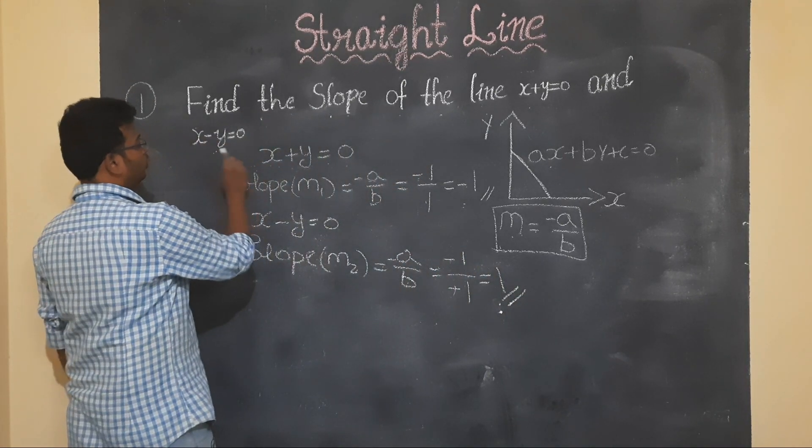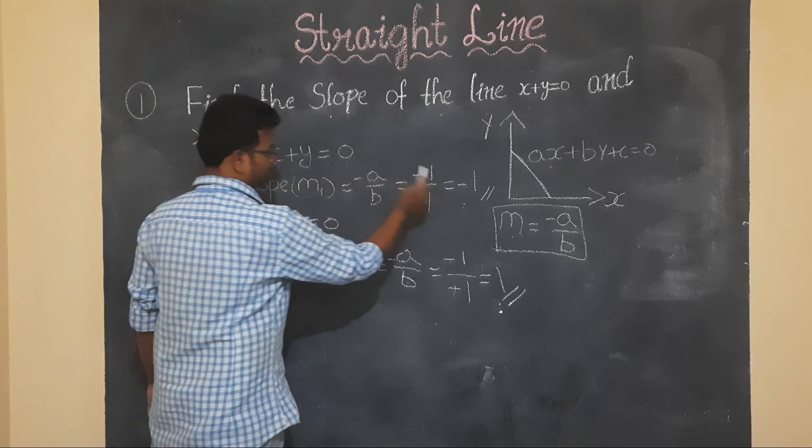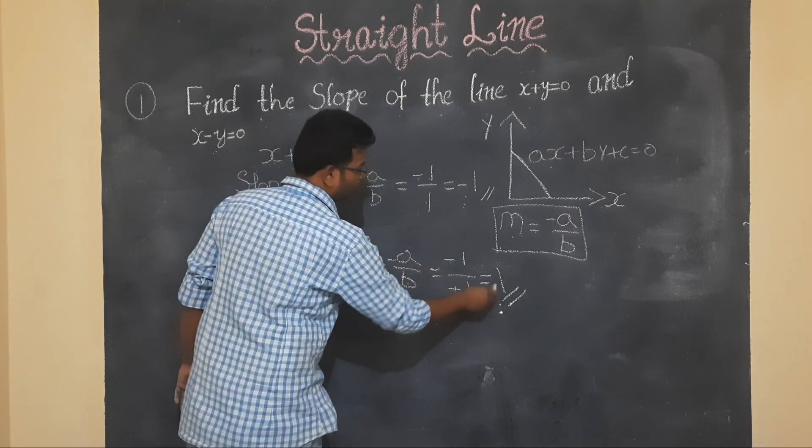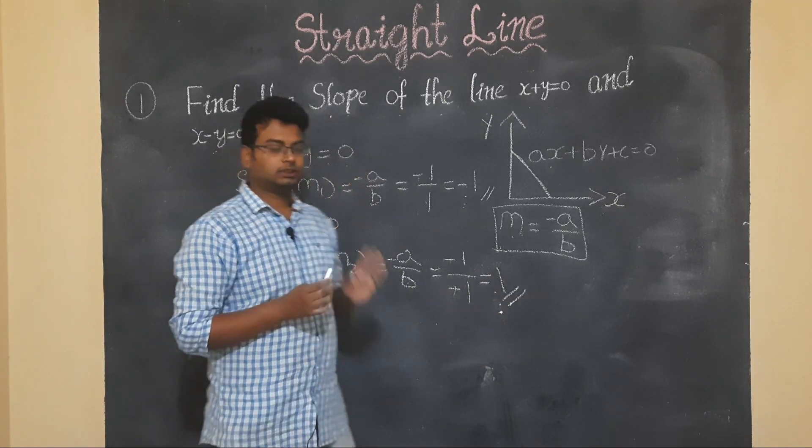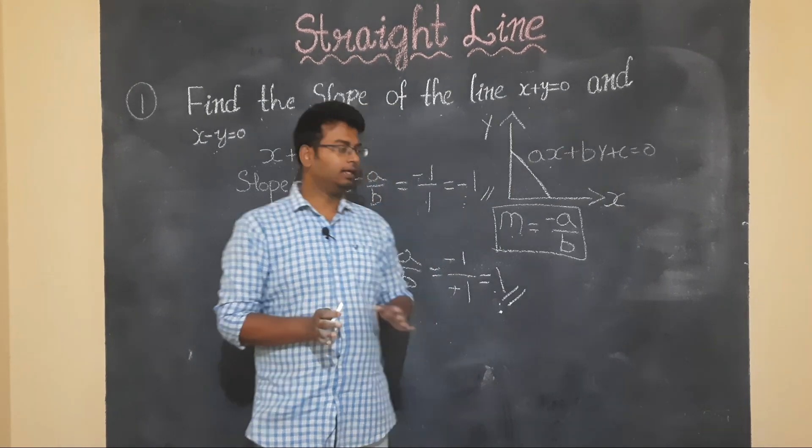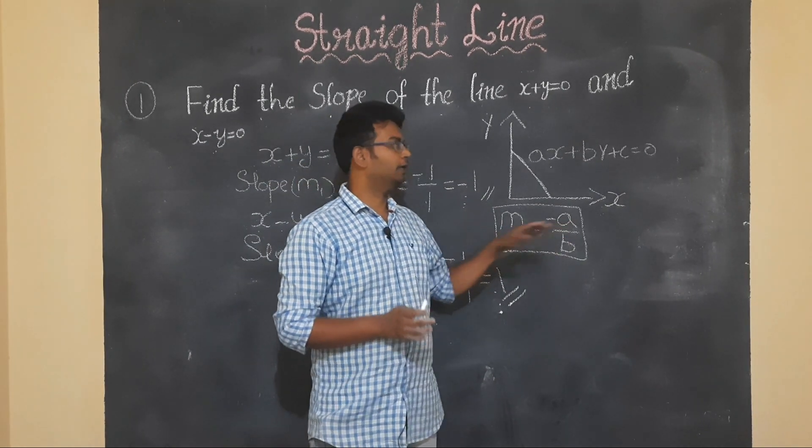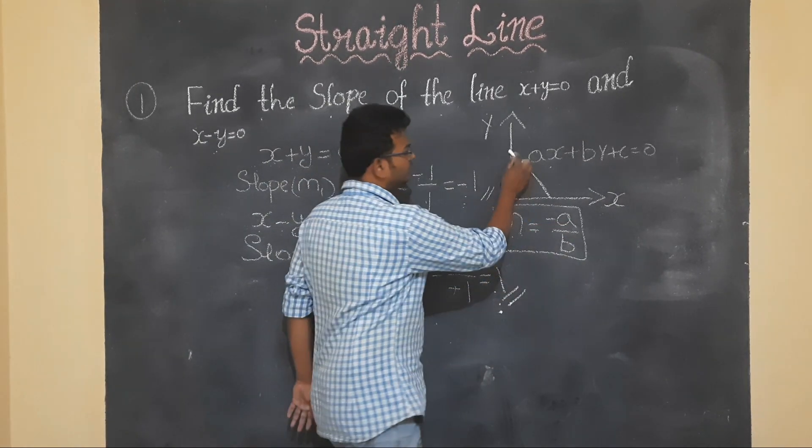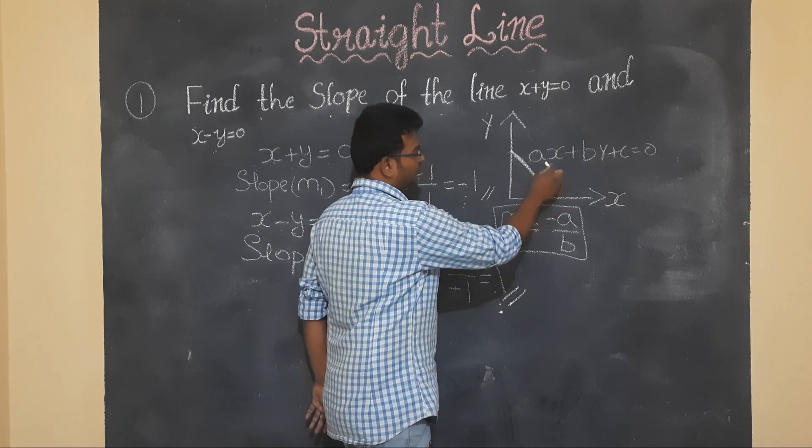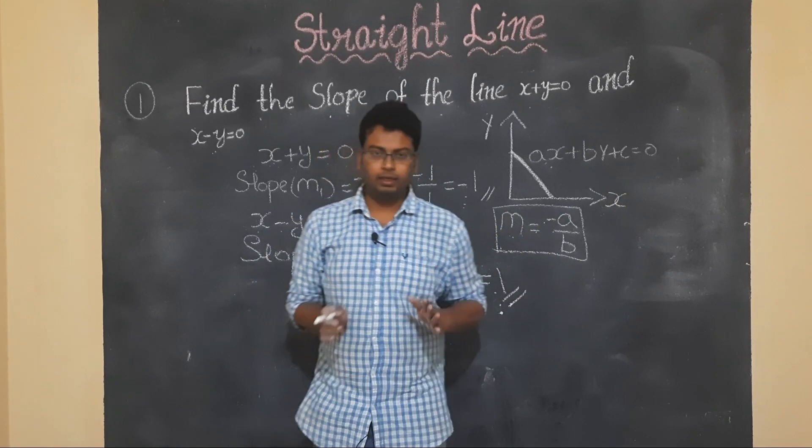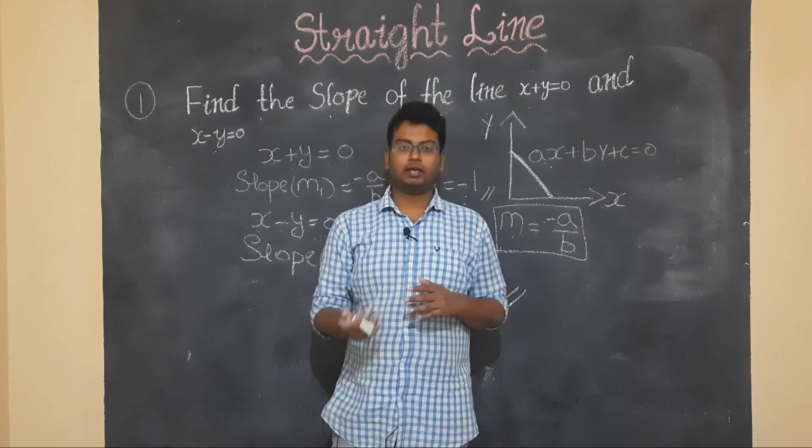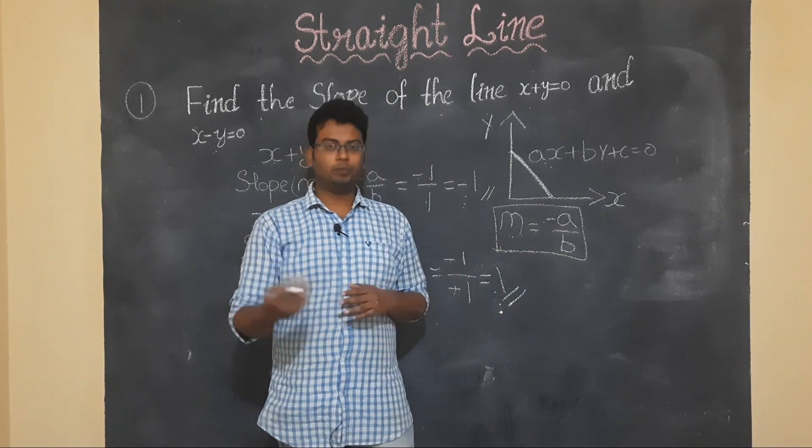So slope of x plus y is equal to 0 is minus 1, and slope of x minus y is 1. Clear students? When equation is given, we can find slope in many ways using formula m is equal to minus a by b.